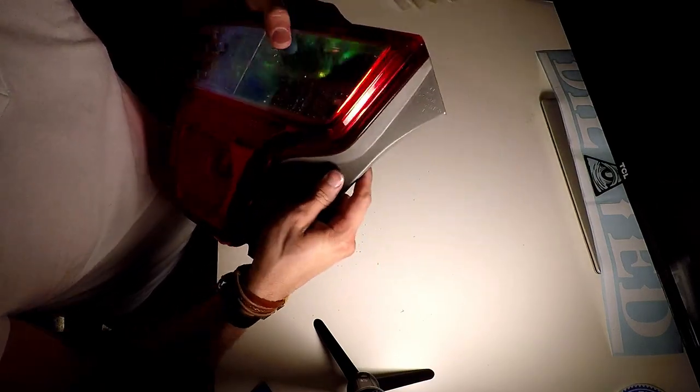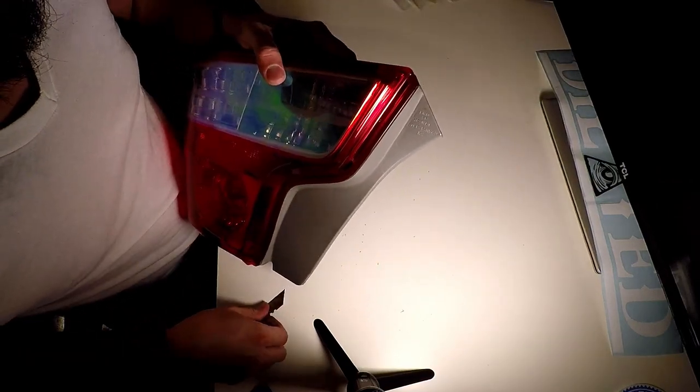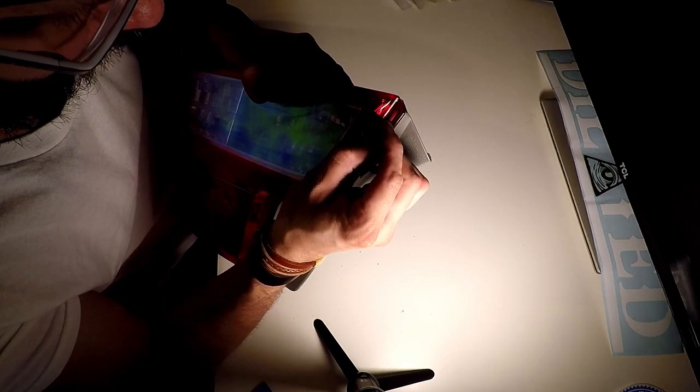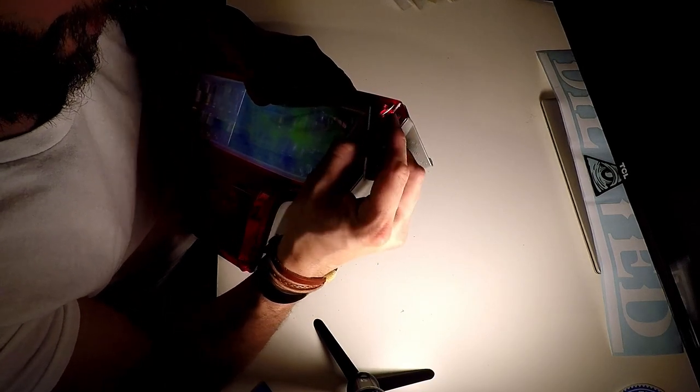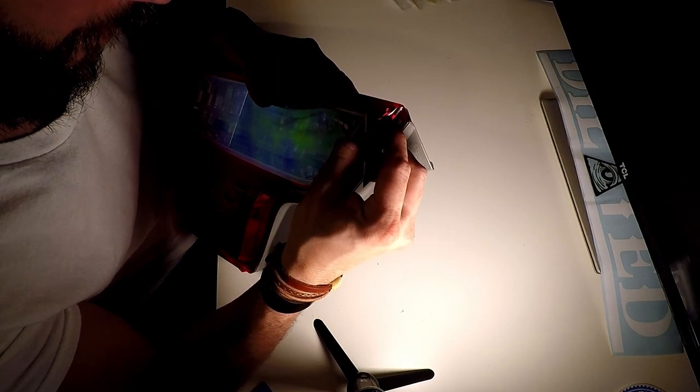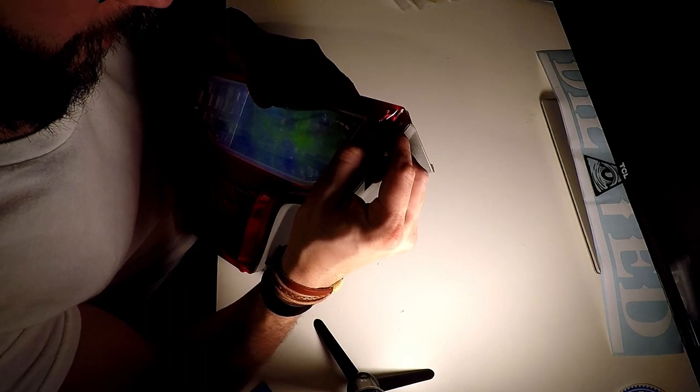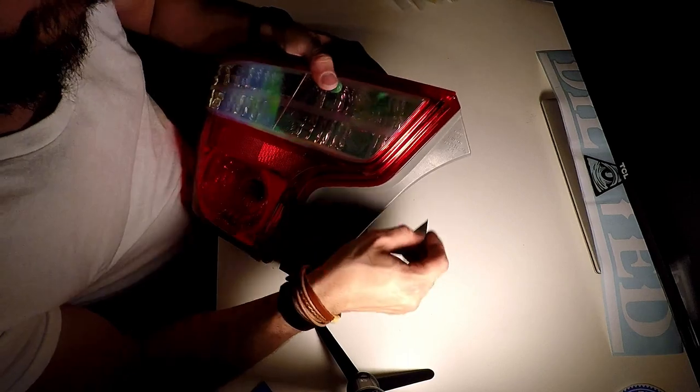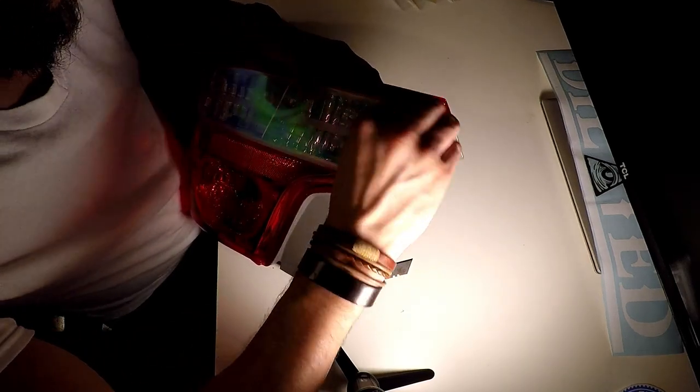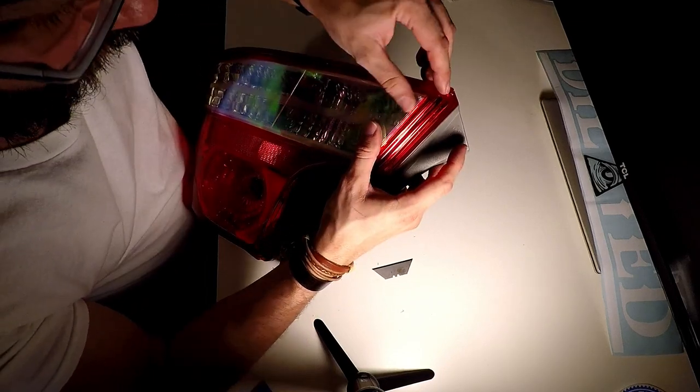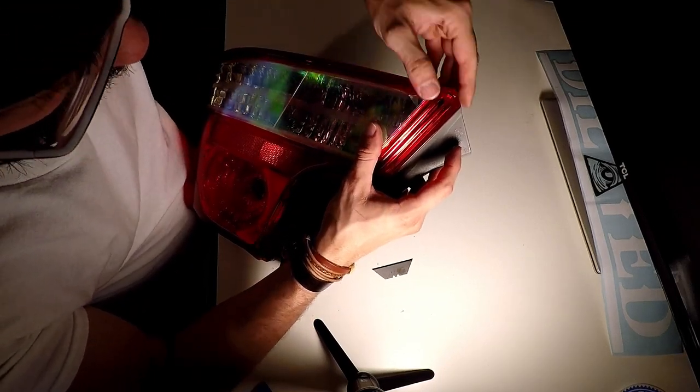So the next step to do is actually take off the protective layer. So what you're going to do is you're going to get your razor blade and, like in one corner, lightly braze it. And eventually the clear plastic will start coming back. There we go.